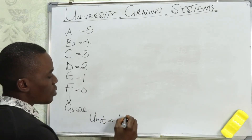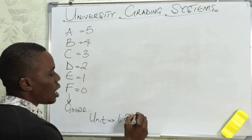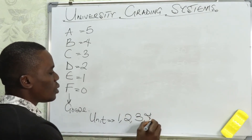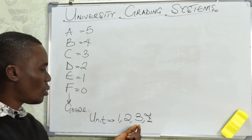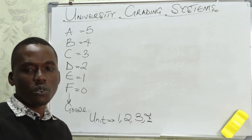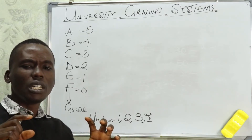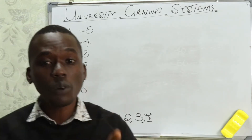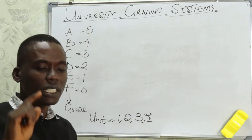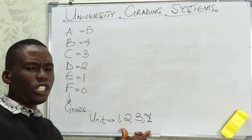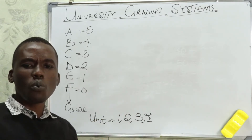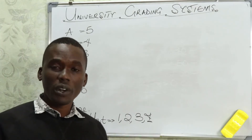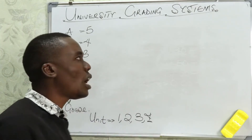We have one-unit courses, two-unit courses, and a maximum of three units, or in some schools, four-unit courses. These are the units attached to each course you will be offering in the university, so be very aware of that. Don't be a novice. Now, your unit and your grade are what are required to calculate your total grade points. Let me show you how to go about that.